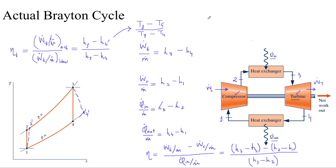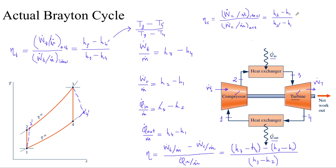Similarly, we can find the isentropic compressor efficiency, which is the ratio of the ideal process to the actual process taking place across the compressor. For the cold air standard analysis, Cp cancels out in the numerator and denominator, and we are left with T2 minus T1 divided by T2-dash minus T1. And that is your actual Brayton cycle, also called the Brayton cycle with irreversibilities.